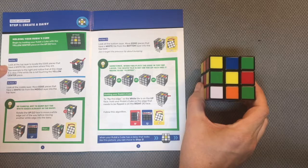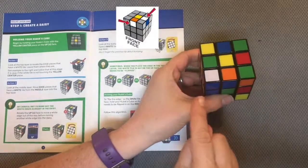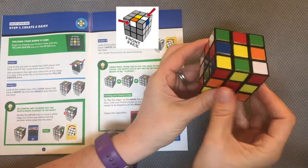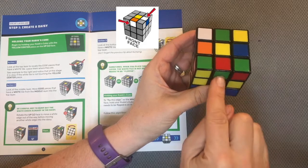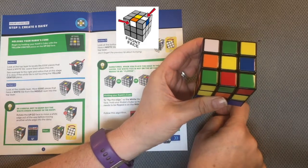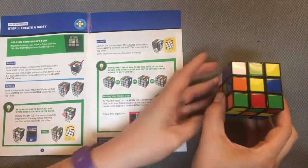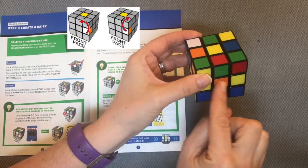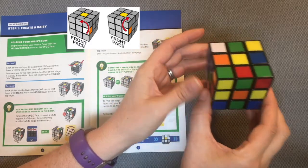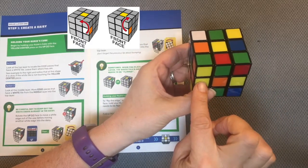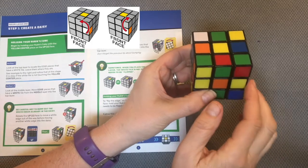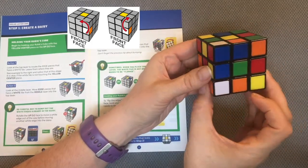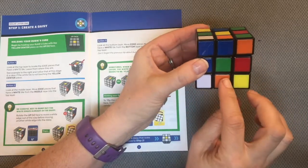Action one suggests that I look for any white pieces already in the top layer. I'm simply going to rotate my cube around and see if I have any white pieces. I do not have any white pieces here. Action two says look at the middle layer, move edge pieces that have a white tile from the middle layer to the top layer. I don't have any in that middle layer, which means I'm going to have them at the bottom.